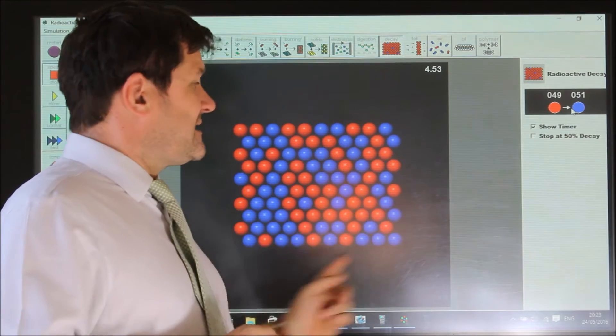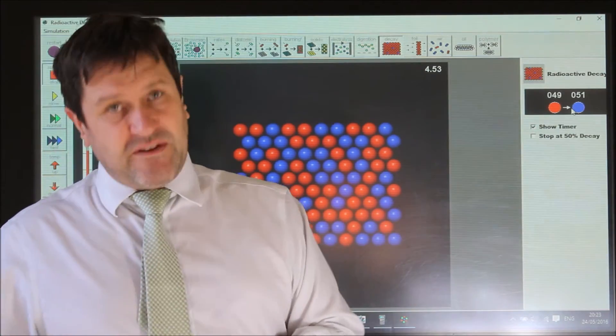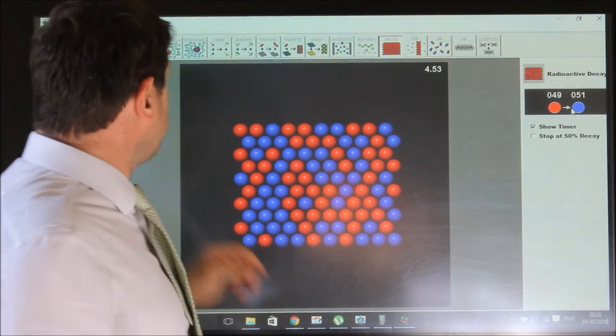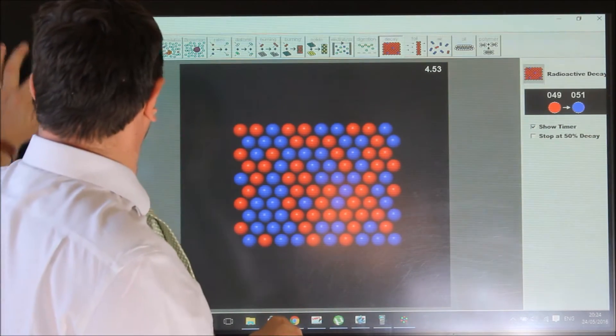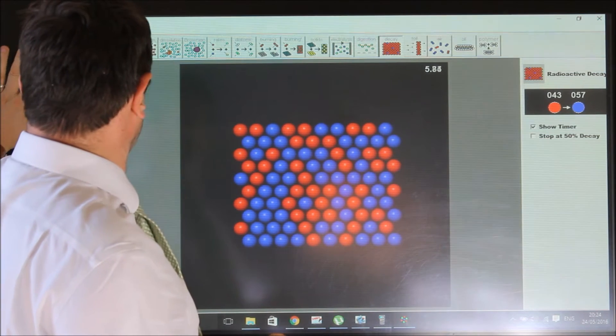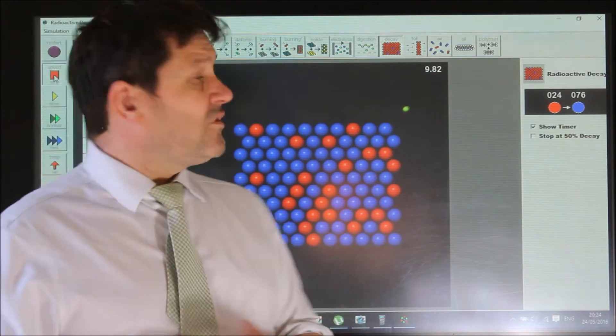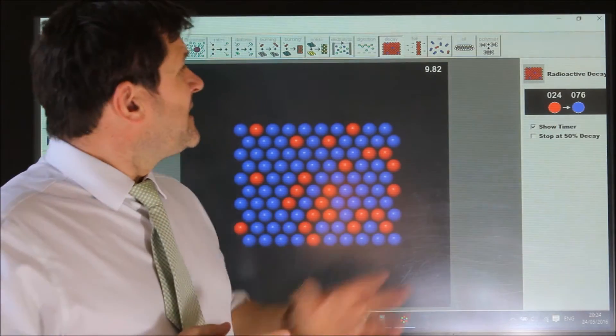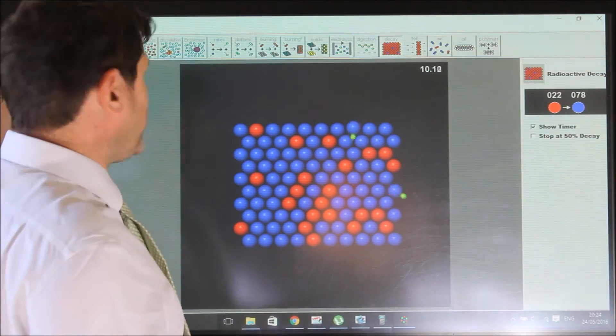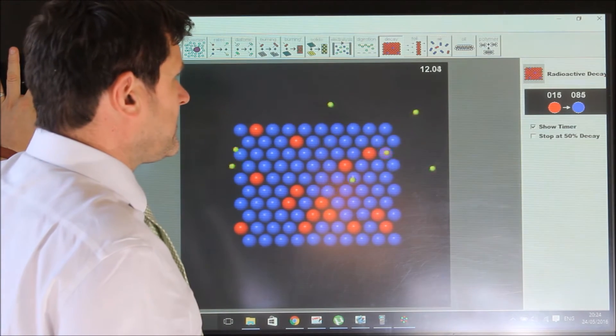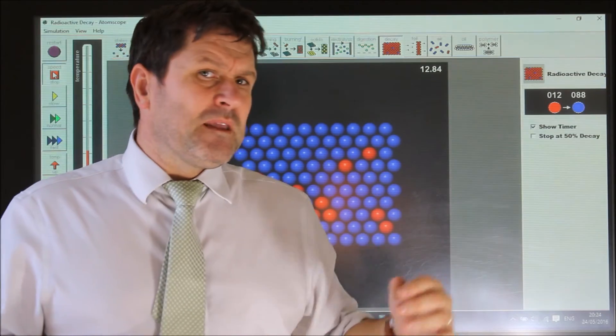Currently it's on 50 in four and a half seconds. If I let it run again, hopefully we'll find in roughly another four and a half seconds this should be about 25. Roughly another four and a half seconds, it's halved. In another four and a half seconds this will half again, so this should go down to about 12. In about four seconds it went down, it halved again.